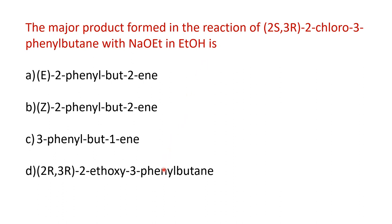You are given 4 different options: 3 elimination products and 1 substitution product. In order to solve this question, we must understand the configuration of this compound and how to draw it in Fisher's notation and Sawhorse notation. The presence of a strong base indicates an elimination reaction, and we need to determine what kind of elimination reaction it is.